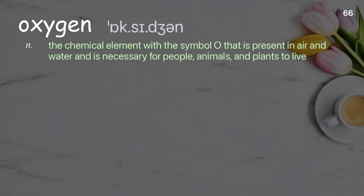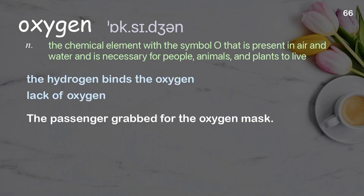Oxygen: the chemical element with the symbol O that is present in air and water and is necessary for people, animals, and plants to live. Examples: the hydrogen binds the oxygen, lack of oxygen. The passenger grabbed for the oxygen mask.